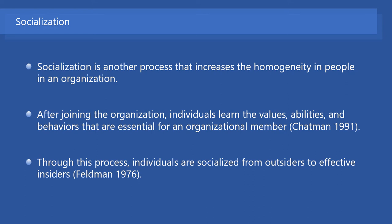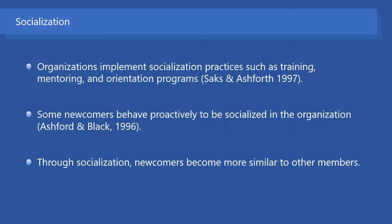After joining the organization, individuals directly experience organizational life. They understand and learn the values, abilities, and behaviors that the organization regards as essential for an organizational member. Through this process, individuals are socialized from outsiders to effective insiders of the organization. Organizations implement socialization practices intentionally designed to adapt newcomers to organizational life. These practices include training, mentoring, and orientation programs. On the individual side, some newcomers behave proactively to be socialized. Through socialization, newcomers become more similar to other members, and therefore the organization becomes more homogeneous.